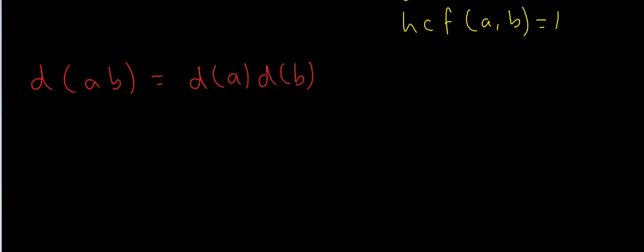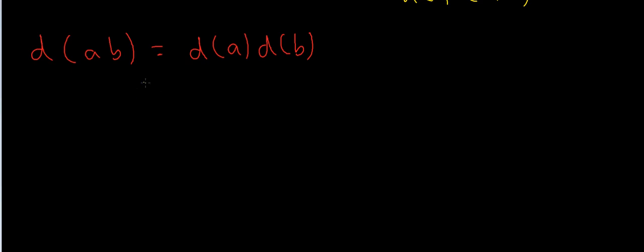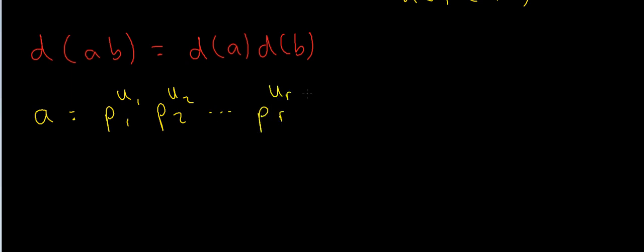Here is how I'm going to prove this. First, we write down the prime factorizations of a and b. Suppose that a has prime factorization p1^u1 times p2^u2, all the way up to pr^ur, where u1, u2, ..., ur are non-negative integer powers of prime numbers, and p1, p2, ..., pr are prime numbers. For example, a could be 2^3 times 5^6 times 7^10.